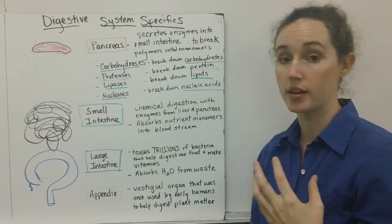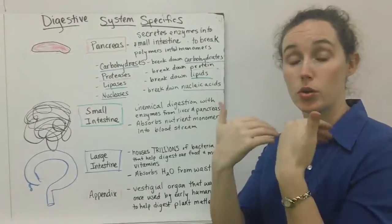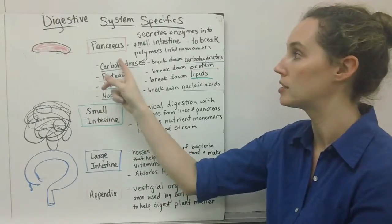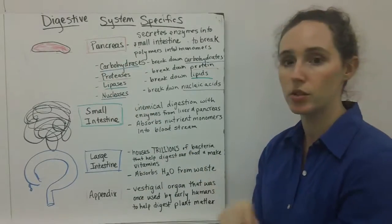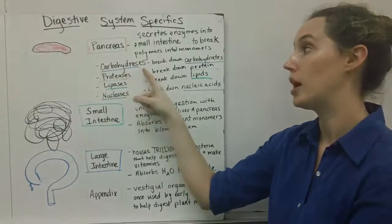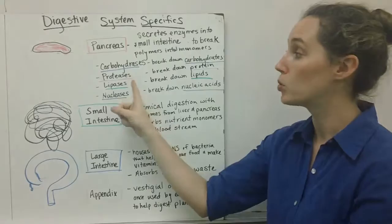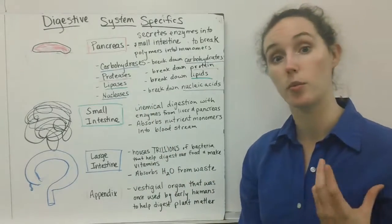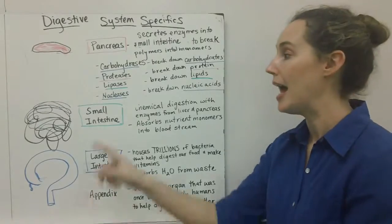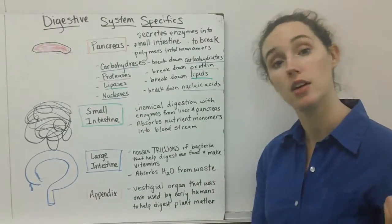Another important organ, similar to the liver in that it secretes enzymes into your small intestine, is the pancreas. The pancreas secretes all kinds of enzymes: it has carbohydrases, enzymes that break down carbohydrates; proteases, enzymes that break down proteins; lipases that break down lipids; and nucleases, which break down nucleic acids like DNA and RNA.